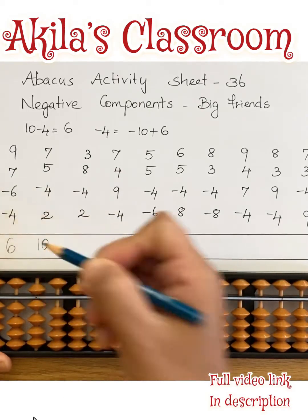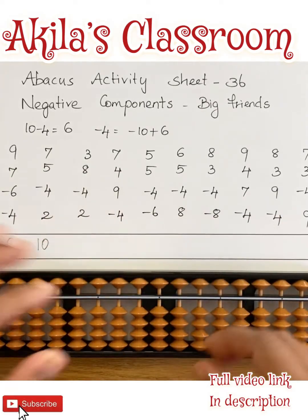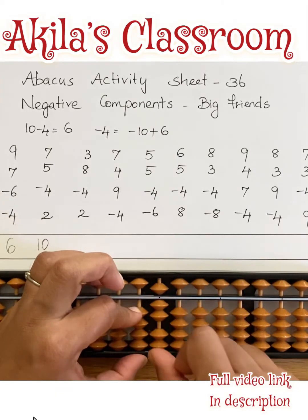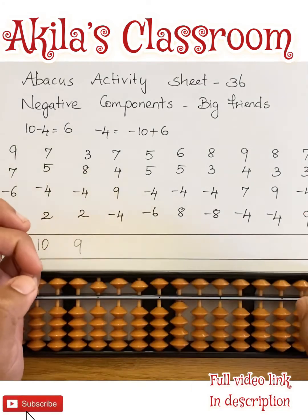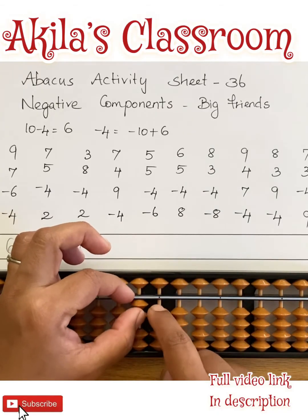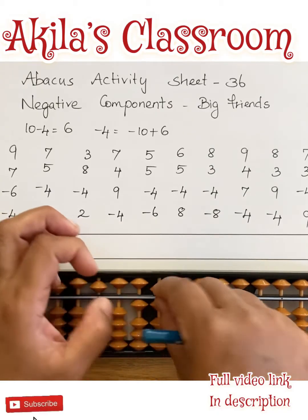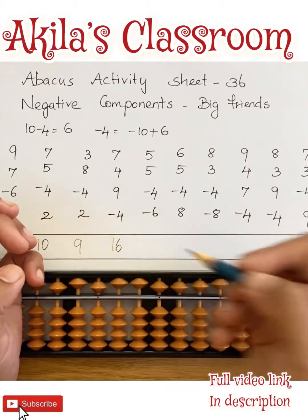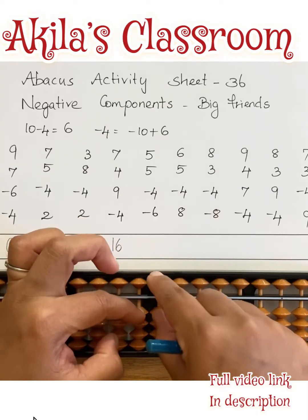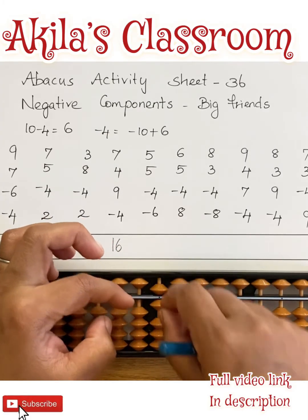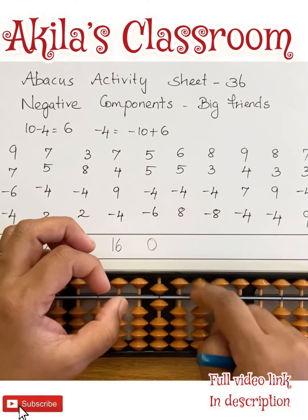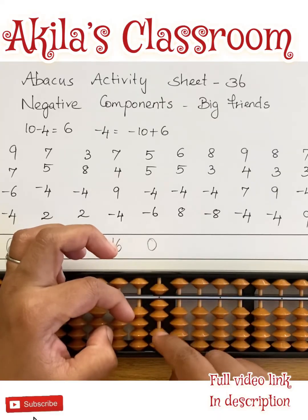Formula: 1, 0, 10. Got it. 3 plus 8 minus 4 plus 2, answer 9. 7 plus 4 plus 9 minus 4, answer 16. 5 plus 5 minus 4 minus 6, answer 0. Got it. 6 plus 5 minus 4, okay.